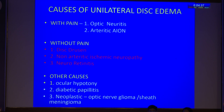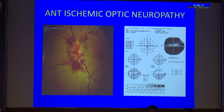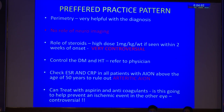Causes with pain: optic neuritis and arteritic AION. Without pain: disc drusen, non-arteritic AION, and neuroretinitis. First case: a 65-year-old with gradual loss of vision, diabetes and hypertension, moderate vision loss, RAPD, disc edema in the right eye and a crowded disc in the left eye, fields showing an inferior altitudinal defect — diagnosis is anterior ischemic optic neuropathy. Preferred practice: perimetry is very useful to reach diagnosis. There is no role of neuroimaging in these cases. Role of steroids is very, very controversial. Most important is to control diabetes and hypertension and refer to the physician. All patients above age 50 must have ESR and CRP done to rule out arteritic AION.